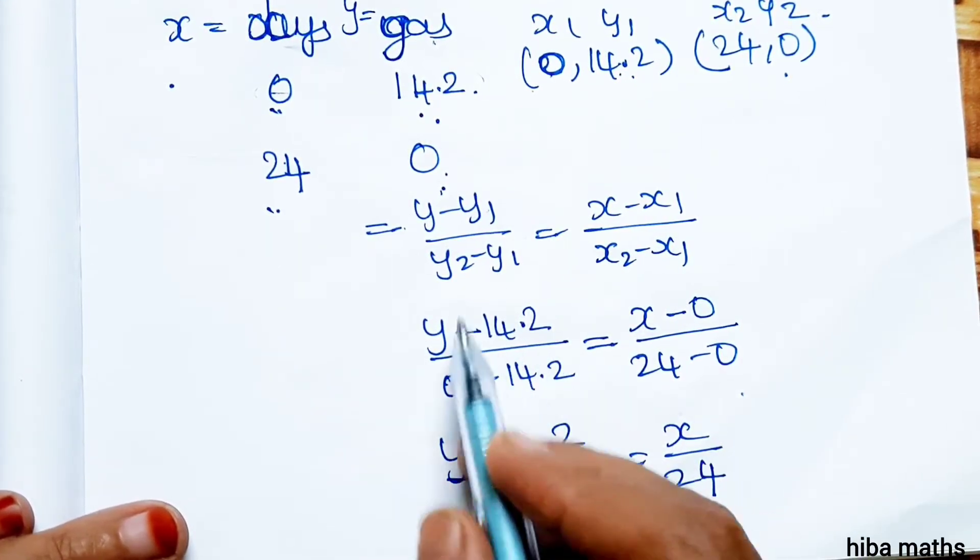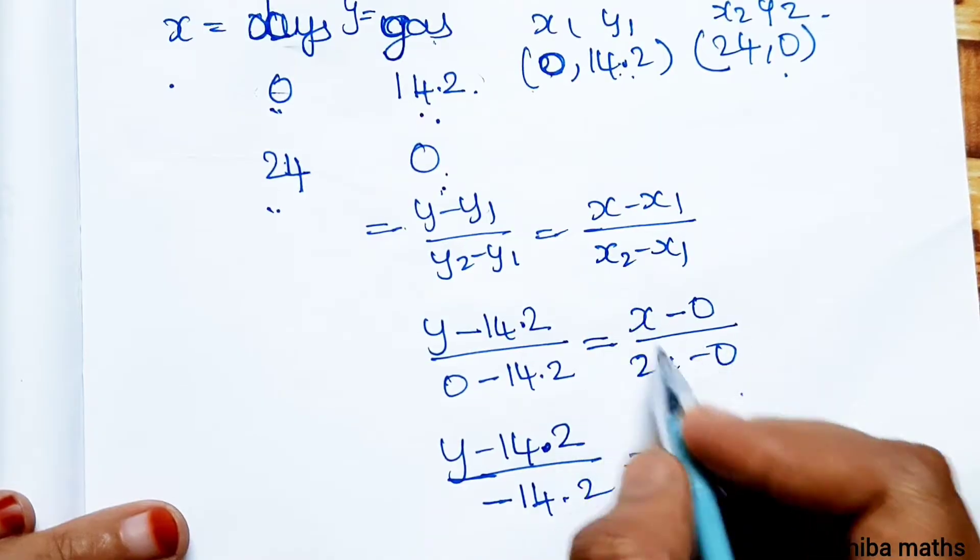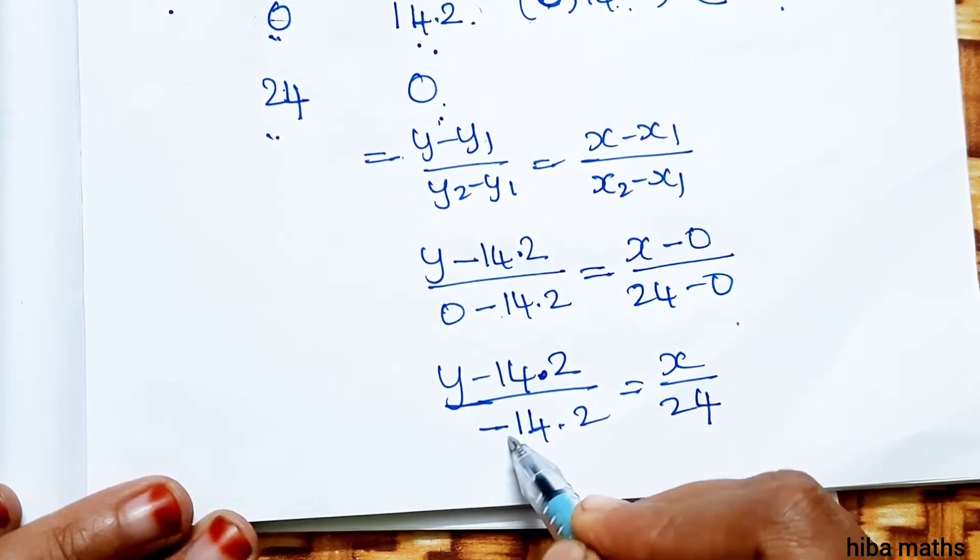Substitute y1 value, y2 value, x1 value, x2 value. So this becomes minus, minus 14 point 2.